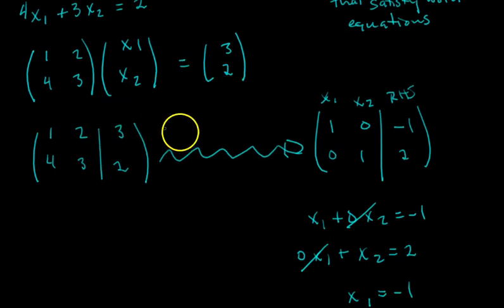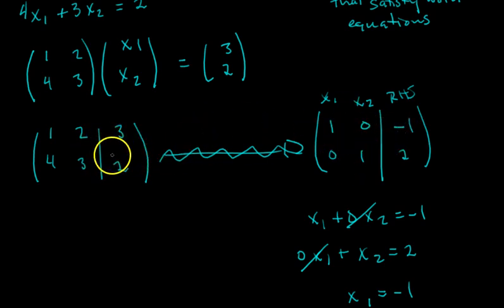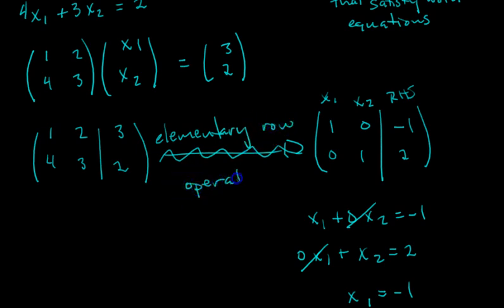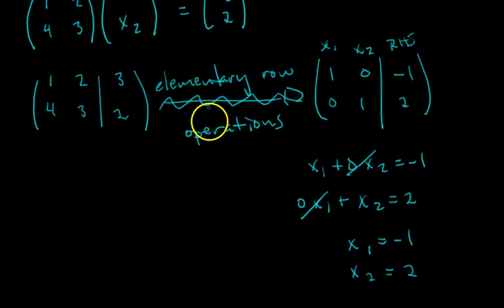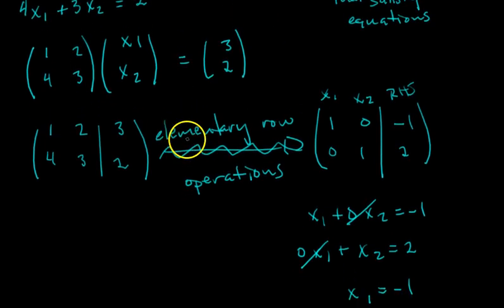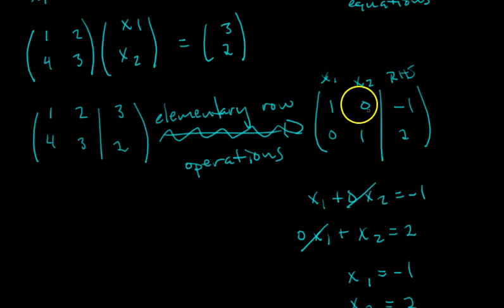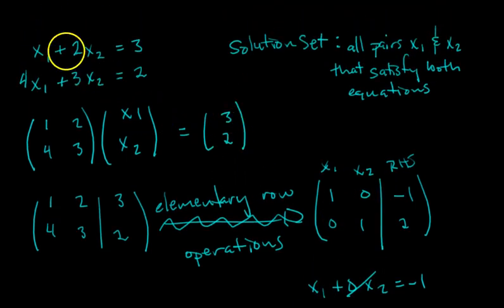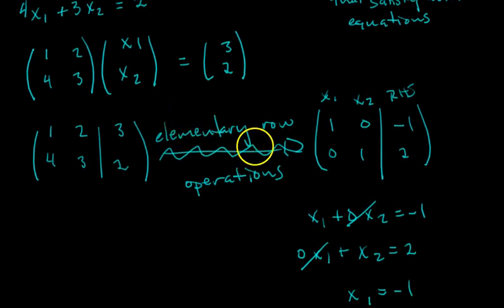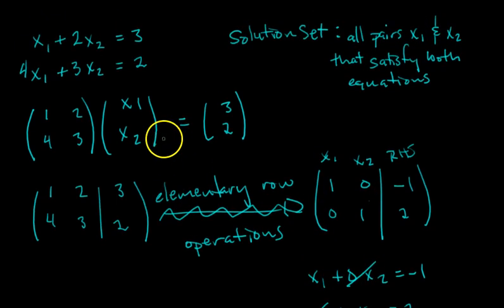The question is: what is this step — how do we go from this augmented matrix to this augmented matrix without changing the solution set? That's where elementary row operations come in. We perform elementary row operations to transform the augmented matrix, and the key point is that they do not change the solution set. So even though the two systems look different, they have the same solution set.